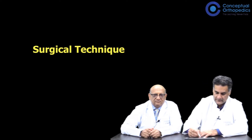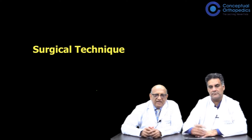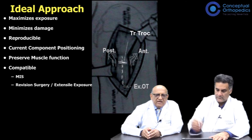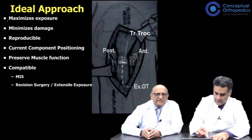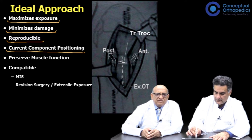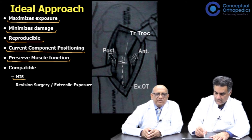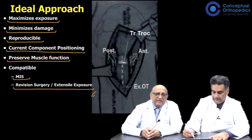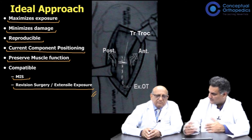Thank you, Dr. Mehra. Let's talk of the surgical technique. What is an ideal approach? An ideal approach to the hip is one which maximizes the exposure, minimizes the damage to the soft tissues, is reproducible, provides the most accurate component positioning, preserves muscle function, and is compatible with minimally invasive surgery, revision surgery, or can be extended as an extensile exposure — extending the incision above and below — if the need arises.